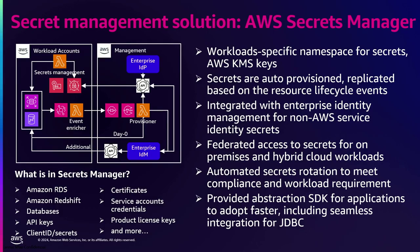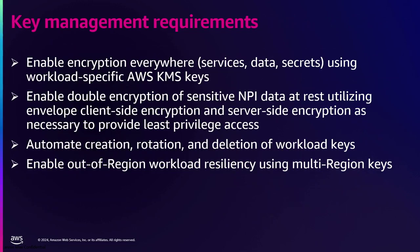We've talked about access and protection of secrets. Now let's move on to the next aspect: protecting data in the environment through encryption. Key requirements for key management include encrypting data at rest, data in motion, and enabling all services that support AWS KMS. By default some services may not require this, but in our environment we made it mandatory.